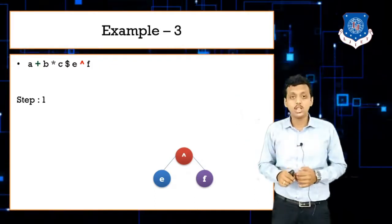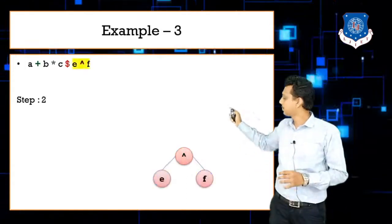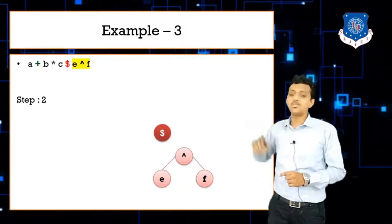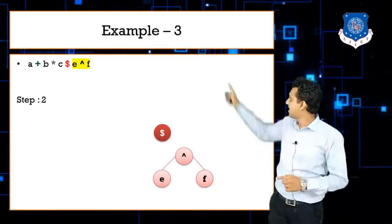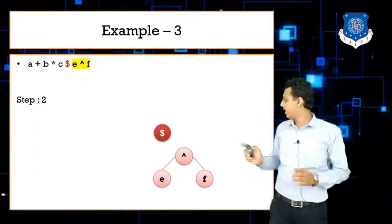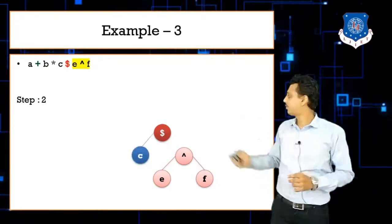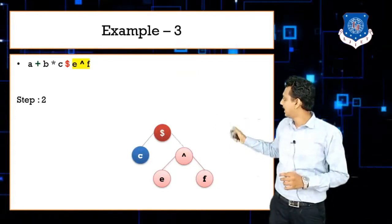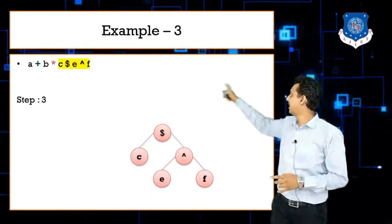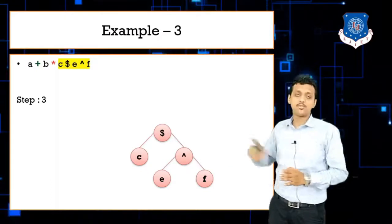After solving e ^ f, we solve dollar next. Dollar becomes the root of this sub-tree: c is the left child of dollar, and the already-solved e ^ f tree becomes the right child of dollar. This whole term c $ (e ^ f) is now solved.